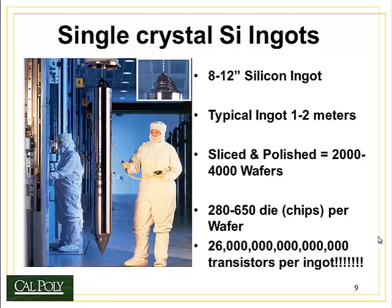On top of that wafer, we'll put down about 280 to 650 chips on each wafer. Each chip has about several billion transistors, which control the performance of the chip. That means that in total there are something like twenty-six hexillion transistors per ingot — that's a lot of computer chips for one ingot of silicon.